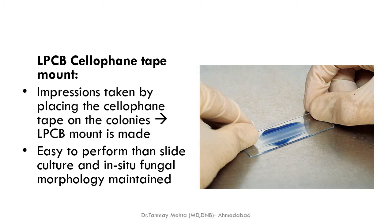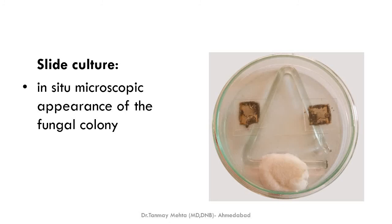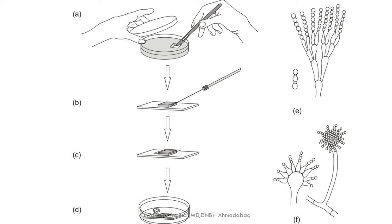LPCB mount can also be done by tape mount — we take cellophane tape, touch it on the growth of the slant or Petri dish, then place the tape on a slide that already has a drop of LPCB. The second method is slide culture, which gives an in situ microscopic appearance of the fungal colony. A small piece of culture medium — usually dextrose agar — is cut and placed on a slide.